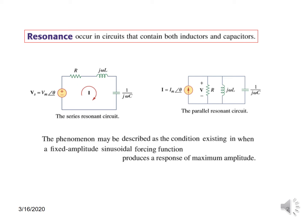The resonance phenomena may be described as the condition existing when a fixed-amplitude sinusoidal forcing function produces a response of maximum amplitude. What this means is that when a fixed input voltage is applied, the voltage across the capacitance or the inductance may be quite high compared to the forcing function.